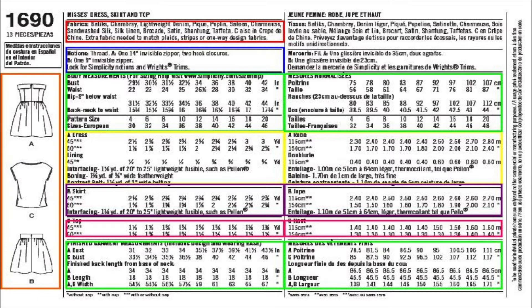At the top of the back, in the section outlined in red, it describes the type of fabric that will work for the design. Directly under that is the blue section — this is also very important. It's the notions section, which tells you what additional supplies you need: do you need a zipper, elastic, buttons? That information is always housed in the notions section.